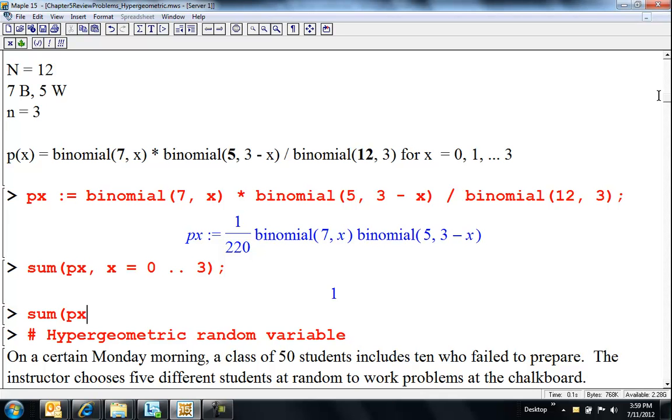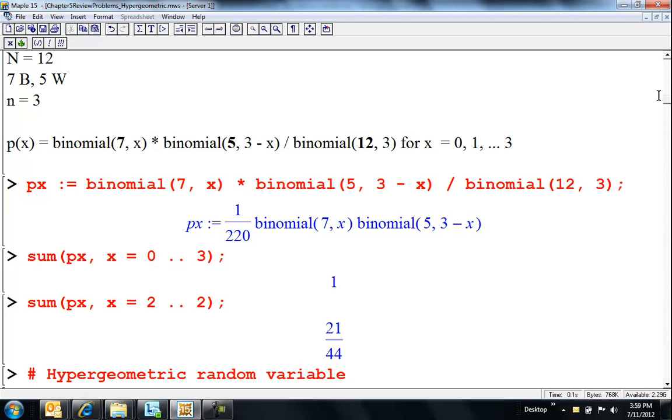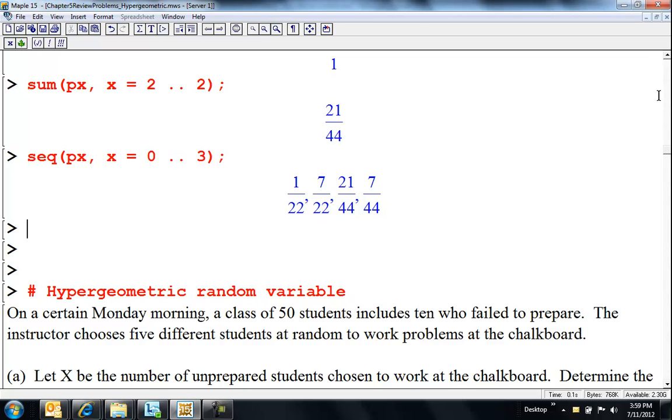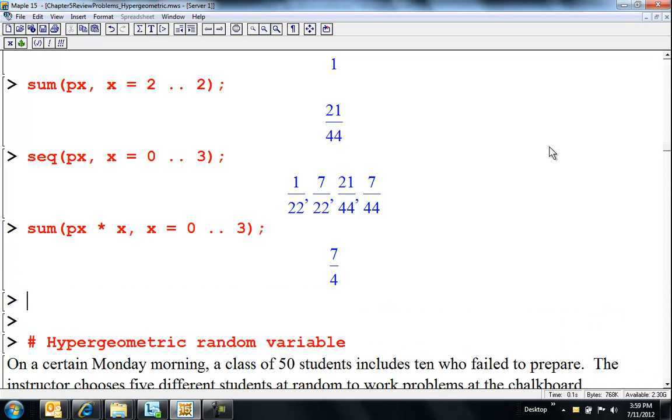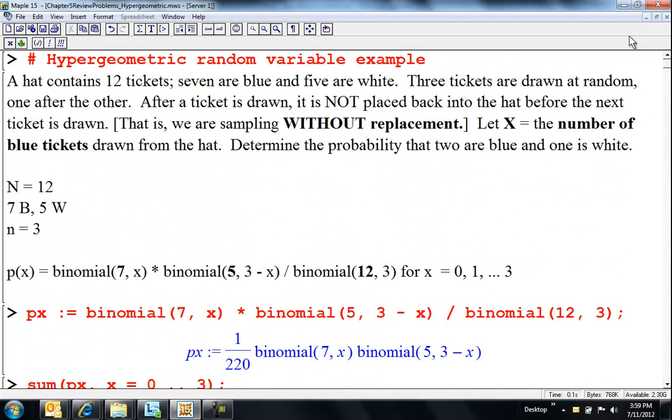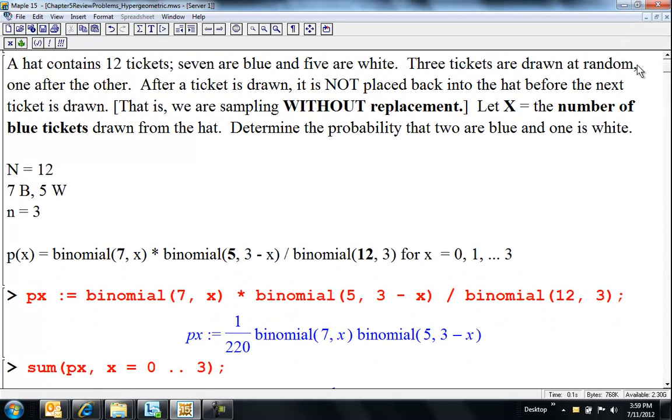So let's just show you this is valid. So p of X is binomial 7, X times binomial 5, 3 minus X divided by binomial 12 choose 3, and I'm going to sum p of X from X equals 0 to 3, and we'll get, of course, 1. And what was the question? Determine the probability that 2 are blue and 1 is white. So I want to find the probability that X is equal to 2. So sum p of X from X equals 2 to 2. That's the probability I have 2 blues. Or I showed you before, you can make a sequence. This is the probability of 0 up to 3 blues. So you can see that adds up to 1. Expected number of blues, p of X times X, X equals 0 to 3. Seven-fourths blues. So there's a hypergeometric. Yeah, you're not putting the items back in when you draw them.